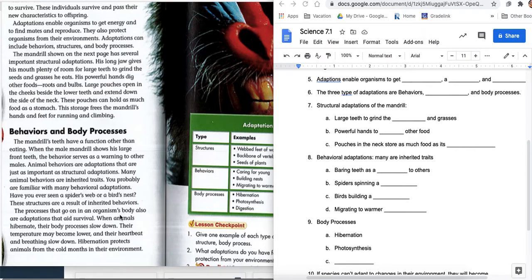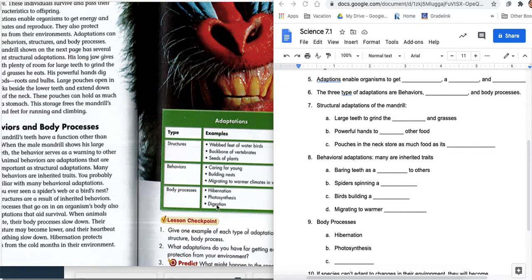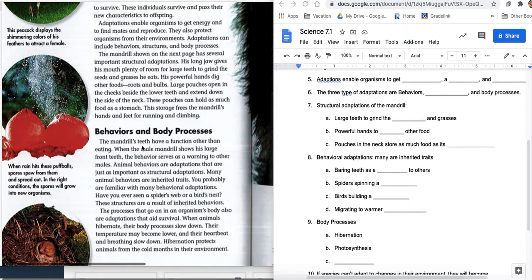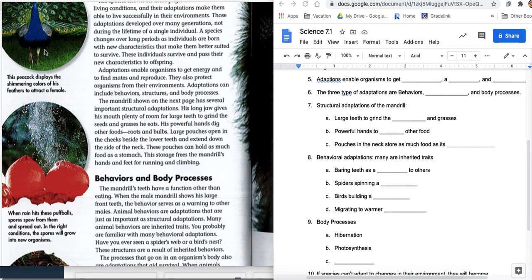The processes that go on in an organism's body also are adaptations that aid survival. When animals hibernate, their body processes slow down. Their temperature can become lower and their heartbeat and breathing slow down. Hibernation protects animals from cold months in their environment. So I wrote down hibernation, what they talked about. Photosynthesis is mentioned, and so is digestion. And these are adaptations that develop with time. You think about depending on what an animal eats, its digestion tract will be different. If it has to digest meat, or if it has to digest food, that stuff is adapted to the environment that they live in. You think about some of the things that you and I eat that other cultures around the world may or may not eat. And we might find certain foods not good or have a hard time digesting it. And other people can because of the adaptations they've gone through.